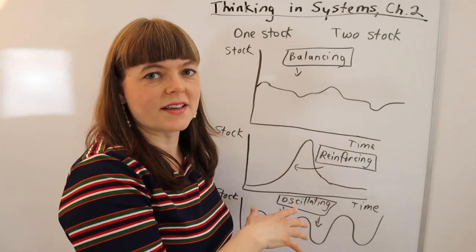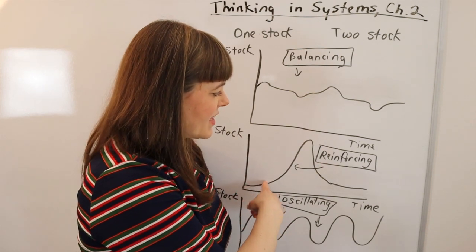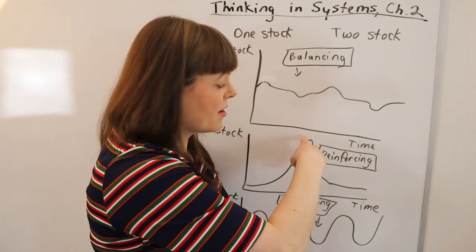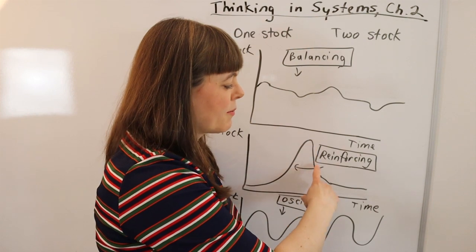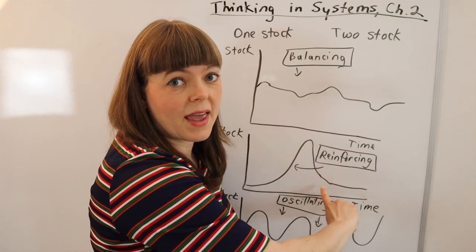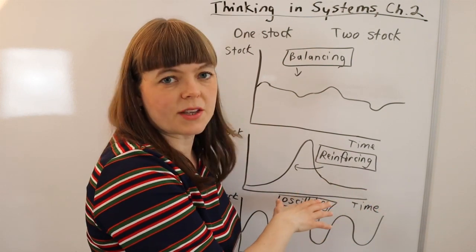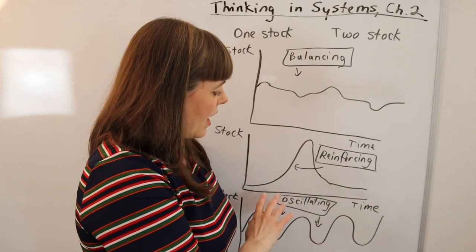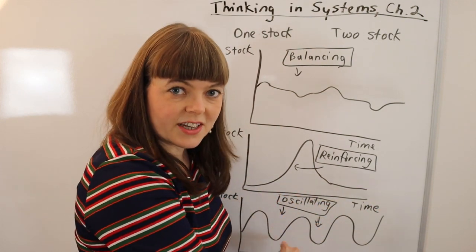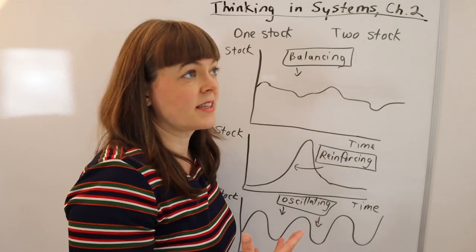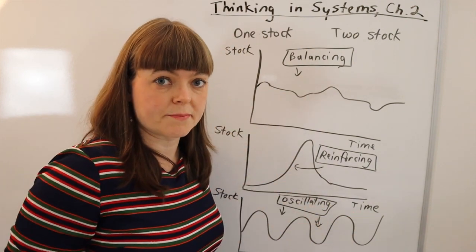Another category of a system is systems that sort of have this exponential growth pattern but then they have a collapse moment where they collapse and then may return to some kind of equilibrium perhaps a different equilibrium than before. And then there's of course oscillation is another pattern you might see of the stock within a system.